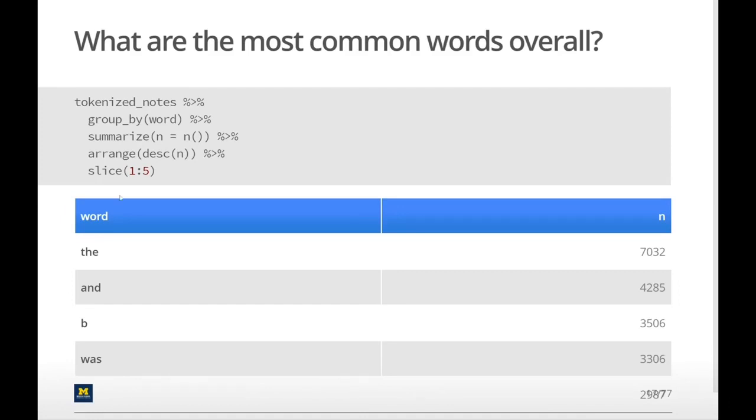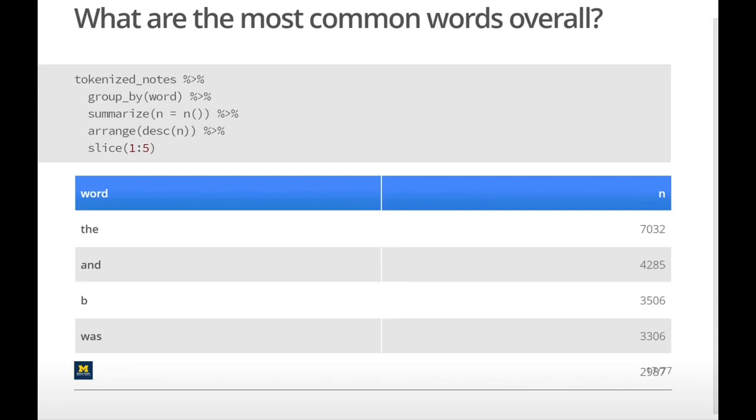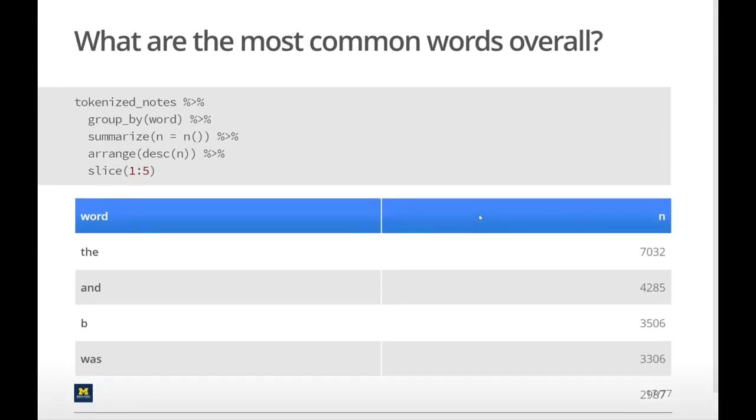Let's look at the most common words overall. The five most common words overall are the, and, be, was, and something else. You might have thought maybe these words will be helpful and give us the nice breadth of the fact that we're looking at urology and neurology notes. But no, it turns out that the most common words are almost like filler words that aren't very helpful that are just commonly used in the English language.